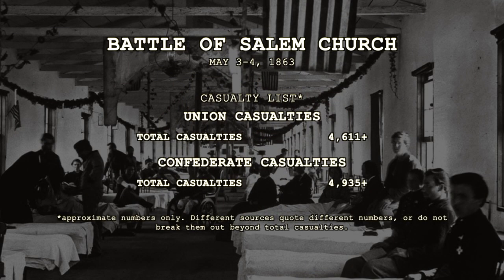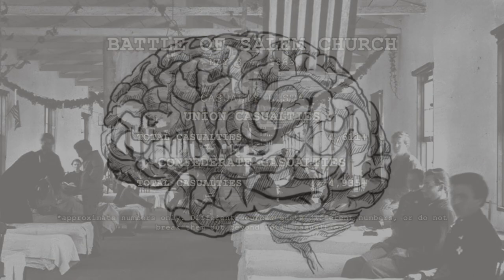The resulting losses for the Union were 4,611 killed, wounded, or missing, while the Confederates suffered 4,935 killed, wounded, or missing.